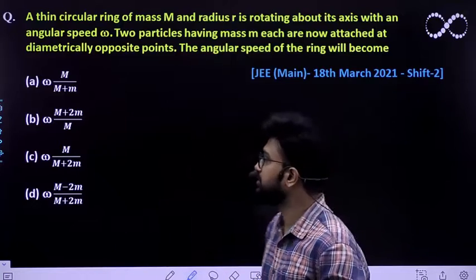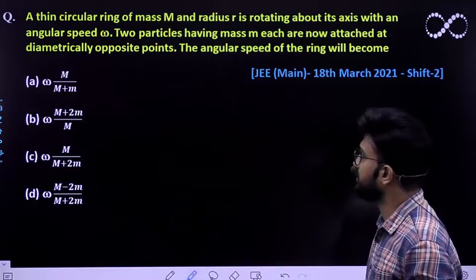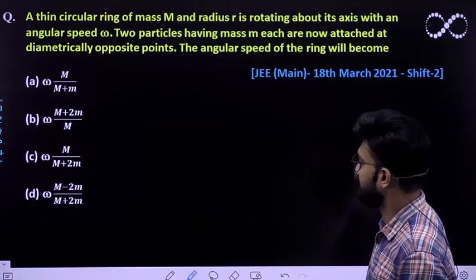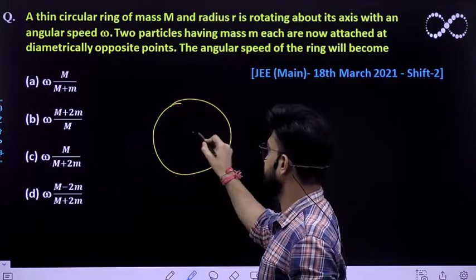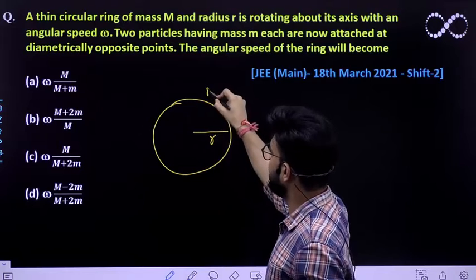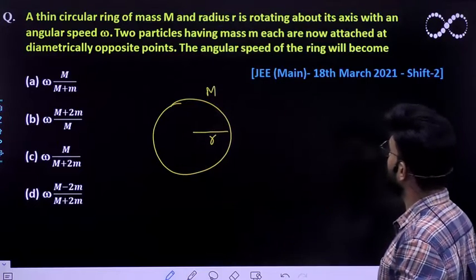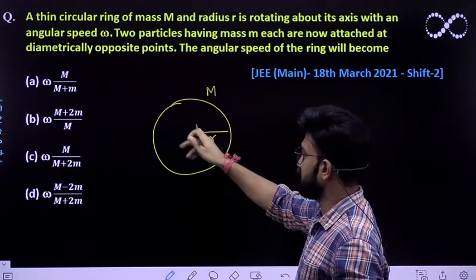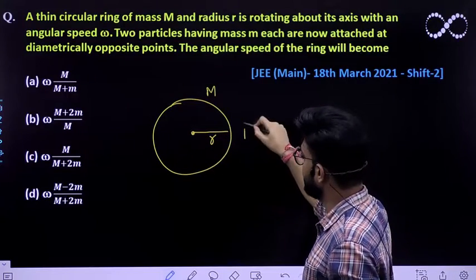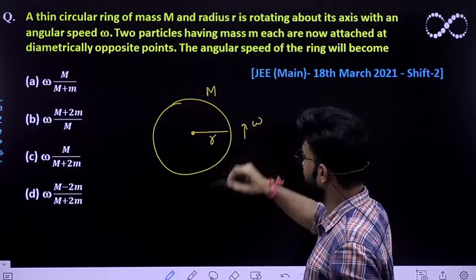This is the question. A thin circular ring of mass capital M and radius r. We will visualize a ring with radius r and mass M given, rotating about its axis with an angular speed omega.